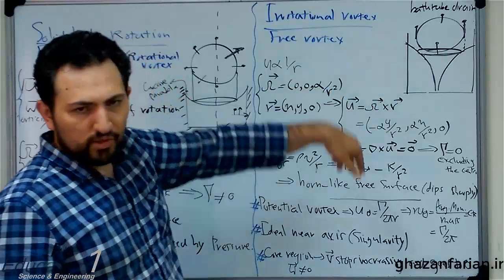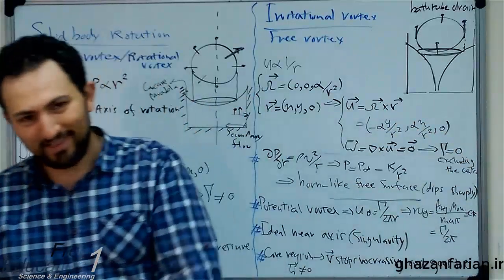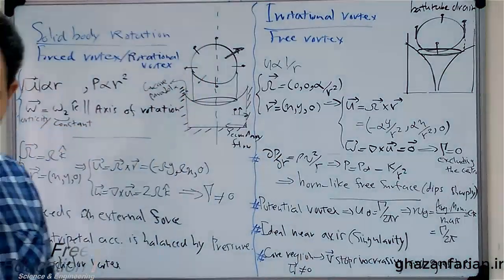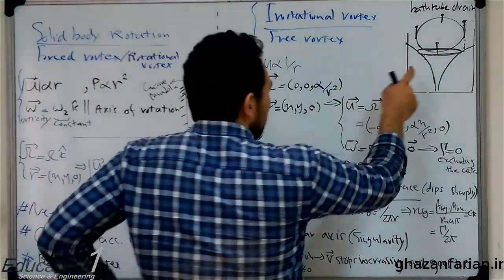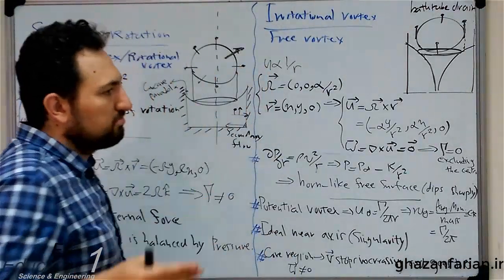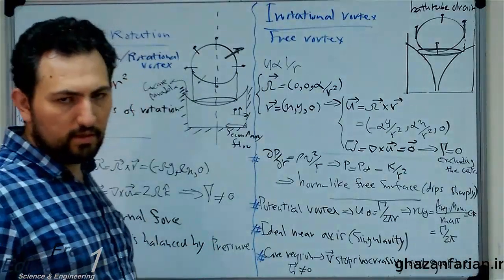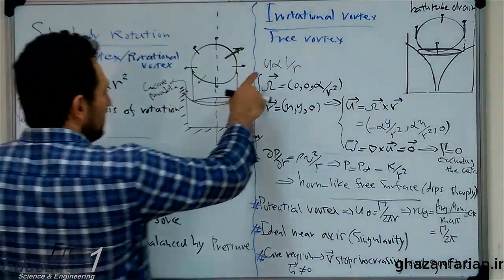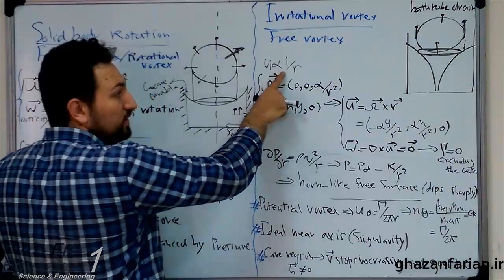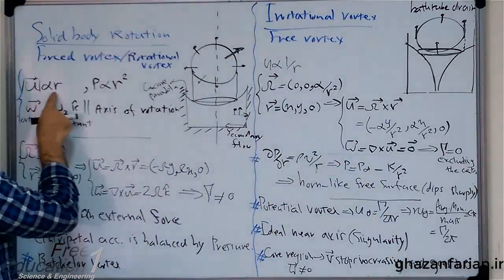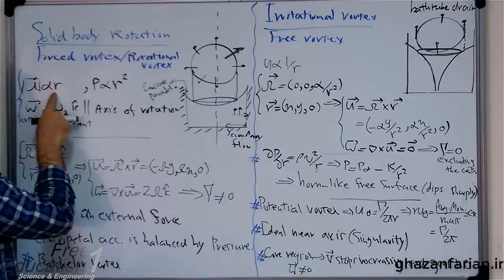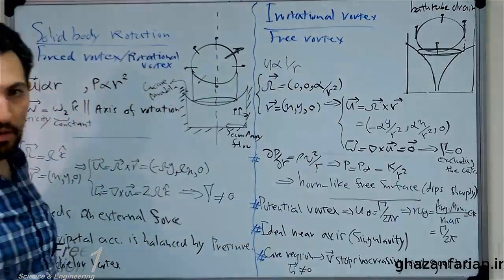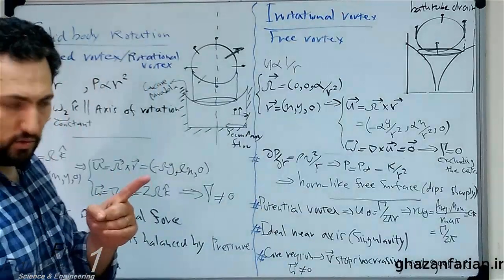Something similar to the bathtub drain. You can examine this in your kitchen — but try to save the water, because each drop of water is important. In this case the velocity is proportional to the inverse of distance from the centerline. In the forced vortex, velocity increases with distance from the centerline, but in the free vortex the velocity decreases by increasing the distance from the axis of rotation.